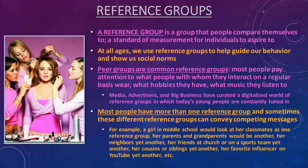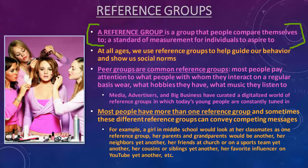Another type of group is a reference group. A reference group is any group that we might compare ourselves to in our society — often used as a kind of standard of measurement, something for us to aspire to or live up to. 'I want to be like these people, they're so cool, they seem like such great people — I want to live up to those standards.' We have reference groups at all ages of our life.